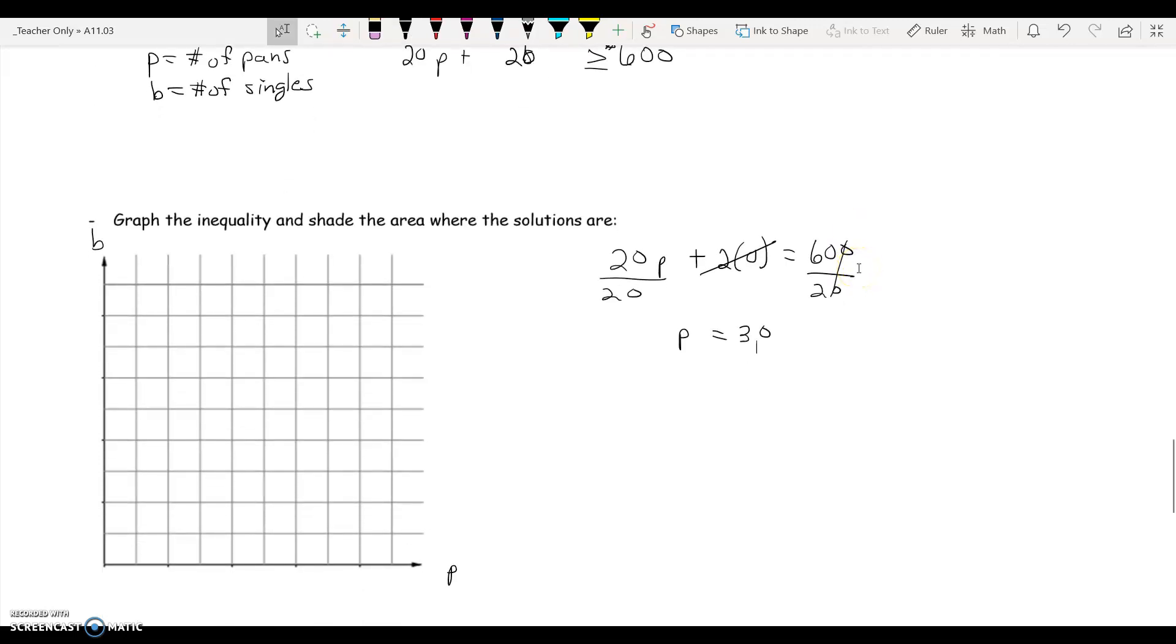So my P intercept is 30. Let's go ahead and plot that on the graph. Well, let's hold on, we haven't even numbered this thing. Let's see, we need our P to go out to 30, so what if we counted this by 5? 5, 10, 15, 20, 25, 30. Okay, so here's my P intercept.